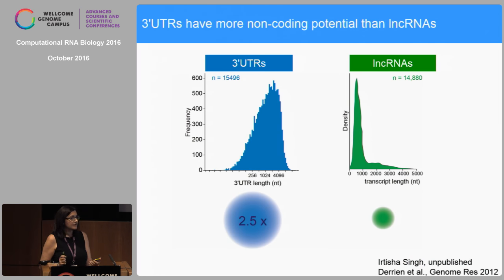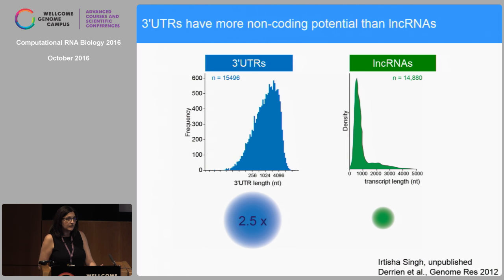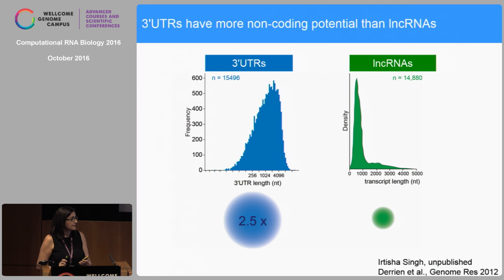Because of the large length of 3' UTRs, they actually have more non-coding potential than long non-coding RNAs, because the median length of long non-coding RNAs is around 500 nucleotides. So 3' UTRs are really a very important part of the non-coding genome.